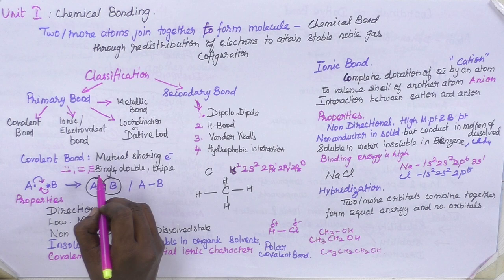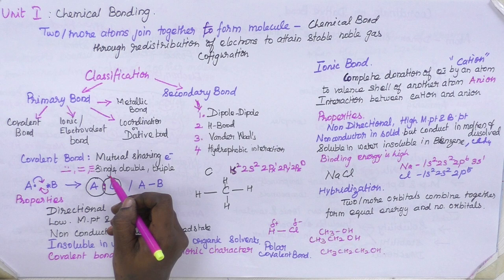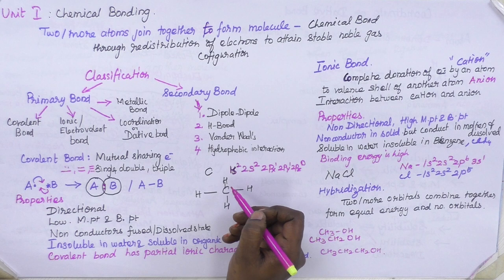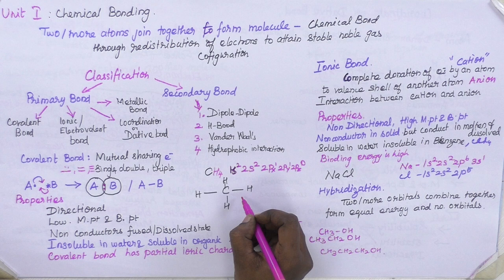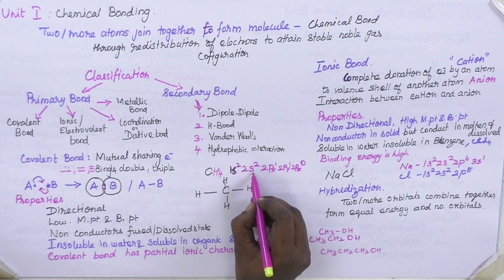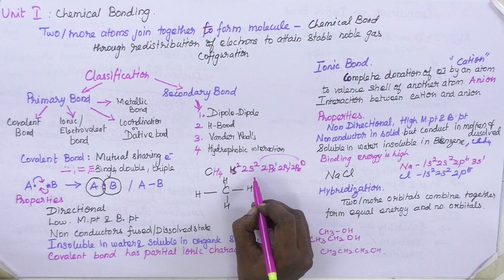The type depends on the number of electrons participating in bond formation. Let me take methane as an example of a covalent compound. The atomic electron configuration of carbon is 1s², 2s², 2px¹, 2py¹, 2pz¹. One of the 2s electrons is shifted to the 2pz orbital, giving carbon a valency of 4.